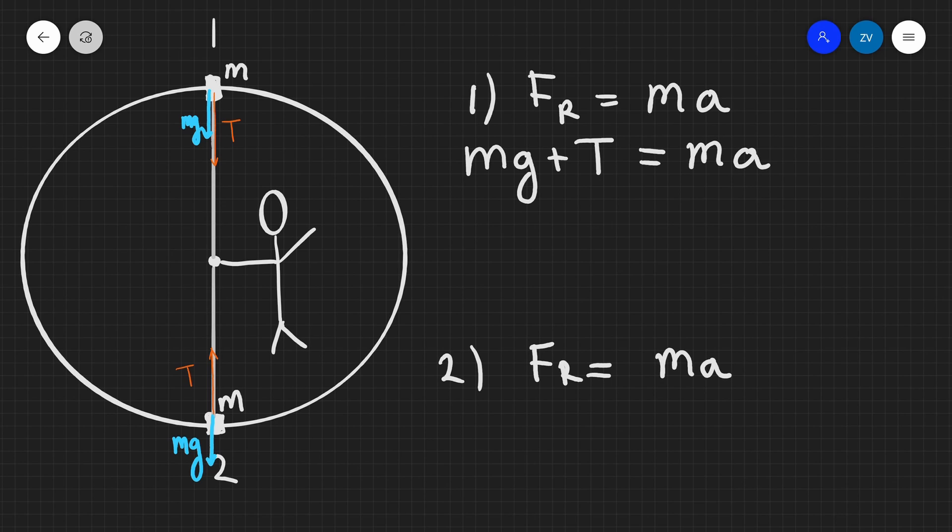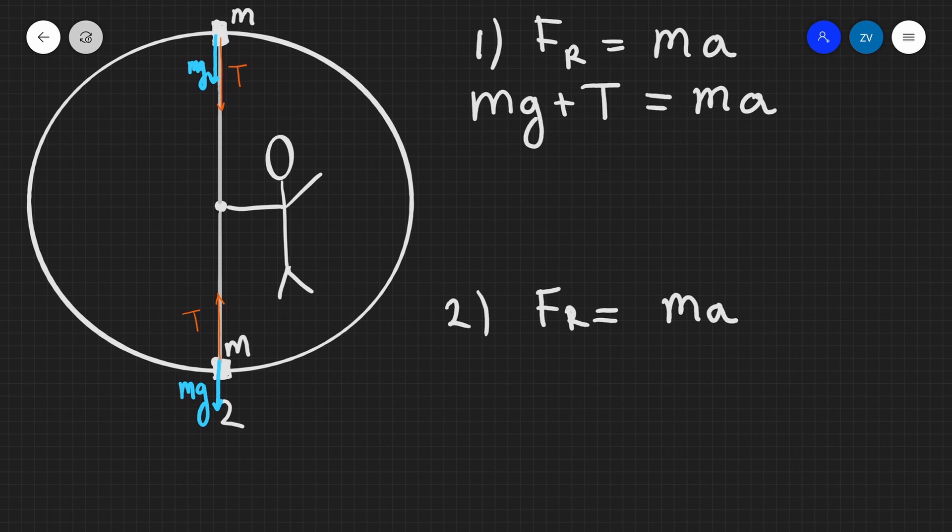In our second position though, the tension is opposite to the weight. So we need to take them away. So in this case, the resultant force is going to equal the tension minus mg. And that's going to equal Ma.